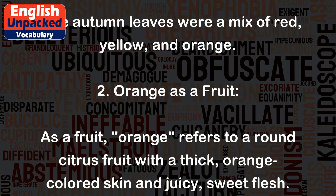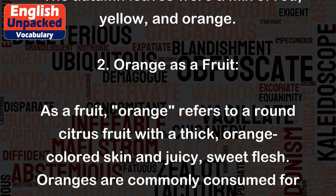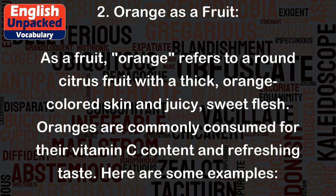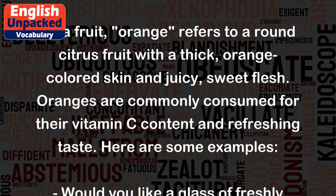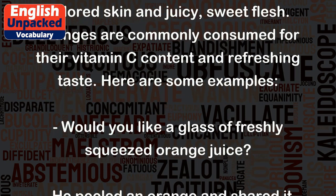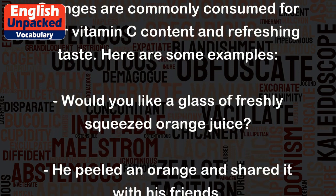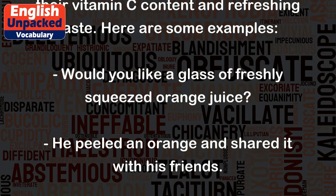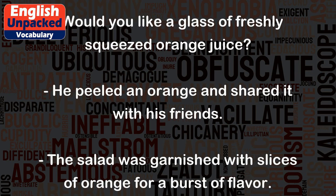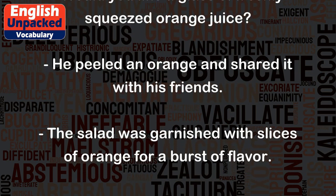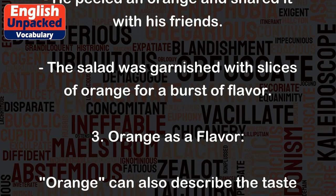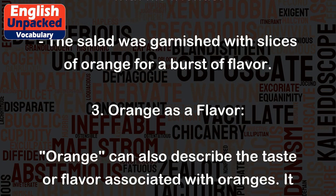2. Orange as a fruit. As a fruit, orange refers to a round citrus fruit with a thick, orange-colored skin and juicy, sweet flesh. Oranges are commonly consumed for their vitamin C content and refreshing taste. Here are some examples. Would you like a glass of freshly squeezed orange juice? He peeled an orange and shared it with his friends. The salad was garnished with slices of orange for a burst of flavor.